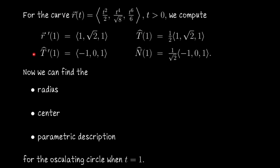We found an expression for the derivative of the unit tangent vector, and when time equals 1 that vector is (-1, 0, 1), which means the unit normal vector — that vector divided by its own length — is 1 over √2 times (-1, 0, 1). In the other video we crossed T and N at this point to find the binormal vector B, and with B we wrote down an equation of the osculating plane.